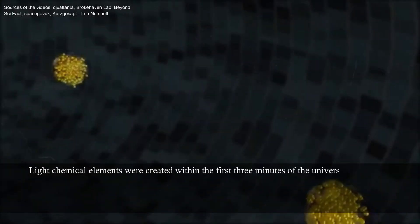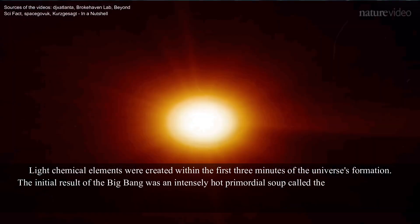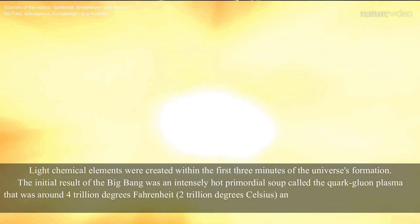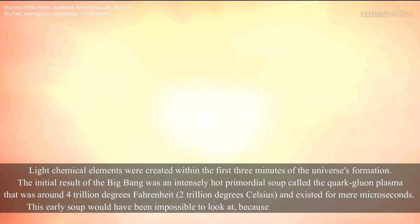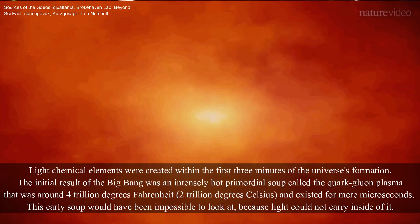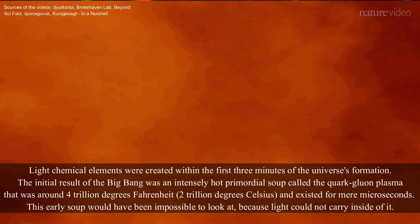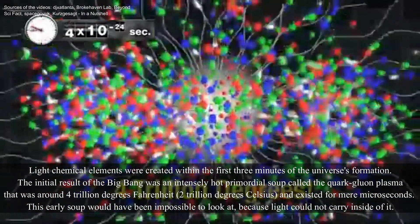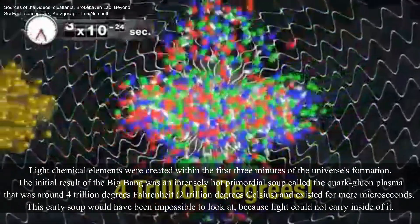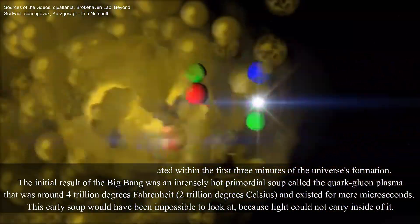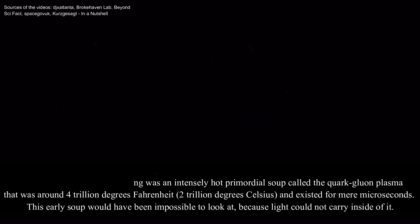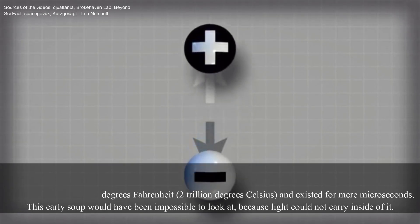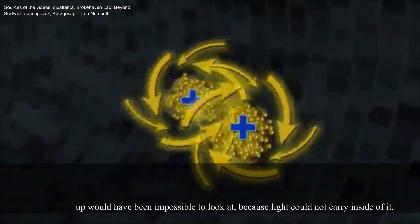Light chemical elements were created within the first three minutes of the universe formation. The initial result of the Big Bang was an intensely hot, primordial soup called the Quark-Gluon Plasma that was around 4 trillion degrees Fahrenheit and existed for mere microseconds. This early soup would have been impossible to look at because light could not carry inside of it.